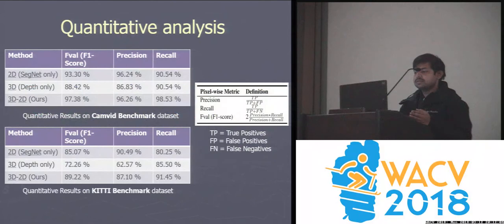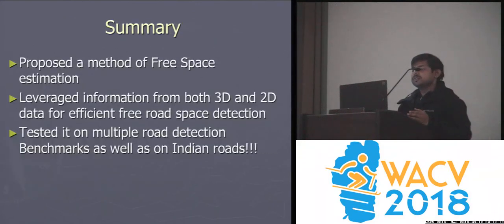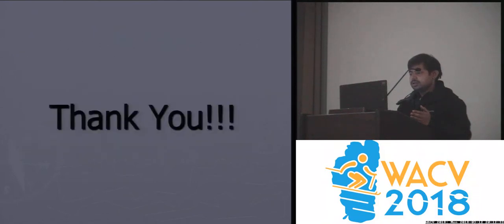Here is some quantitative analysis on the KITTI and CAMVID datasets, which are publicly available benchmarks. We show better performance in both when compared with only 2D or only 3D based methods. To summarise, we proposed a method for free space estimation on roads, leveraging information from both 3D and 2D data, tested on multiple road detection benchmarks as well as on Indian roads, which is a very challenging scenario. Thank you.